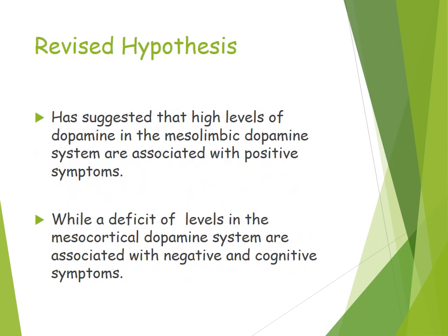The revised hypothesis suggests that high levels of dopamine in the mesolimbic system are associated with positive symptoms, whereas negative and cognitive symptoms come from a deficit of dopamine levels in the mesocortical dopamine system. So it's not simply high levels of dopamine, but rather abnormal levels: positive symptoms are linked to high dopamine in the mesolimbic pathway, while low dopamine in the mesocortical system is linked to negative and cognitive symptoms.